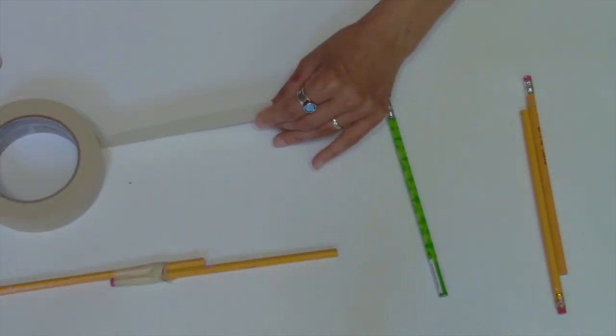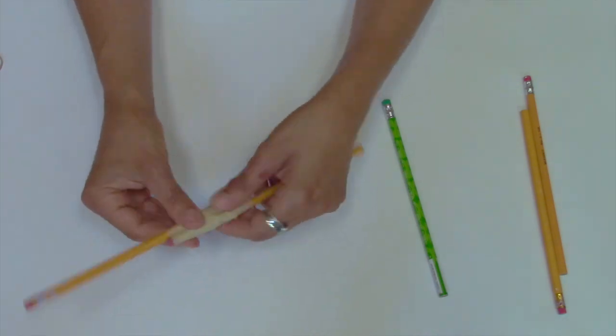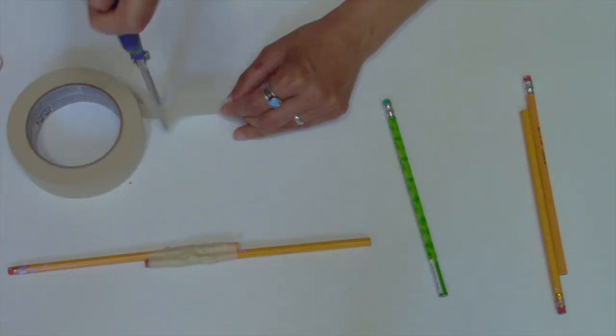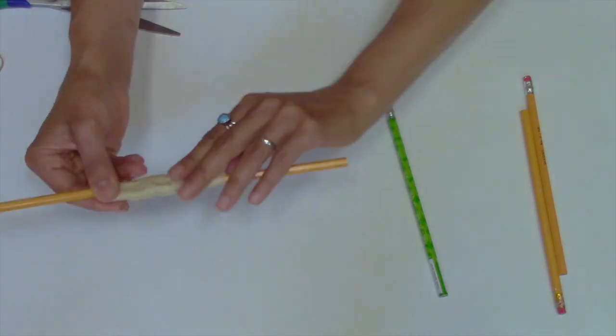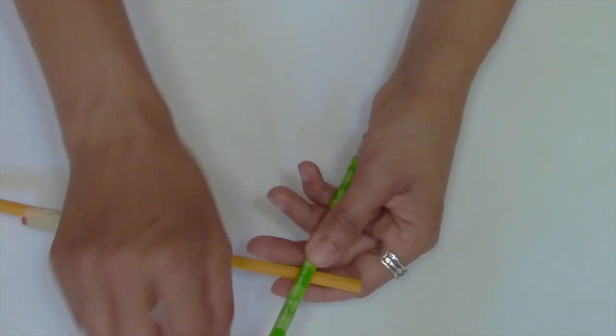You've probably noticed that one of my pencils is a different color than the others. The green pencil has a smooth round surface, unlike the yellow ones that have six flat sides. If you have a round pencil, you'll want to use it here, but it's really not a requirement.